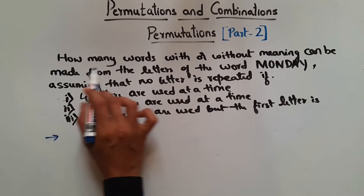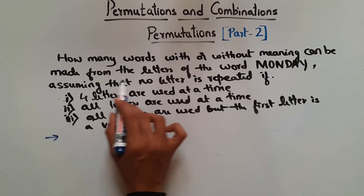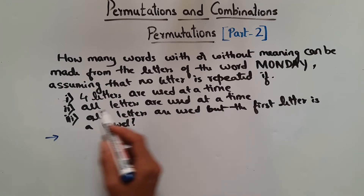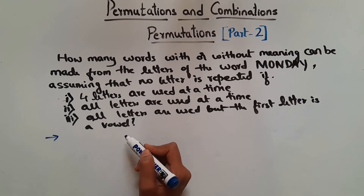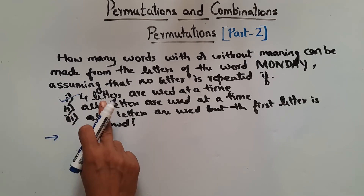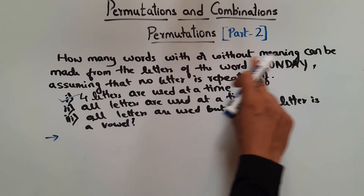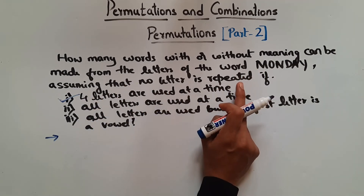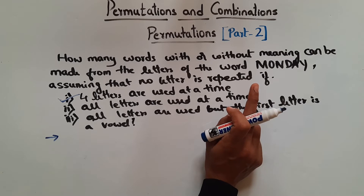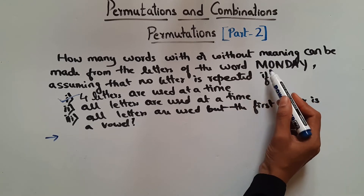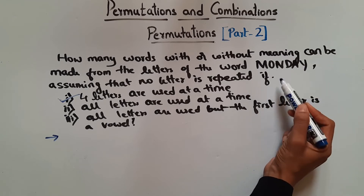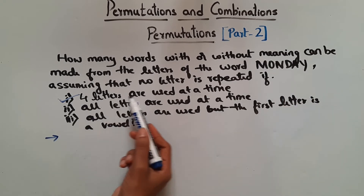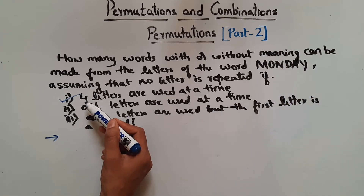Now let's see the next problem. Here it says how many words with or without meaning can be made from the letters of the word MONDAY, assuming that no letter is repeated, if 4 letters are used at a time. So we have to find how many words with or without meaning can be made from the letters of the word MONDAY, assuming no repetition. We know for no repetition, NPR is given by N factorial by N minus R factorial. So how many letters are there in MONDAY? 1, 2, 3, 4, 5, 6. So 6 letters, all distinct. So 4 letters are used at a time, so 6P4.